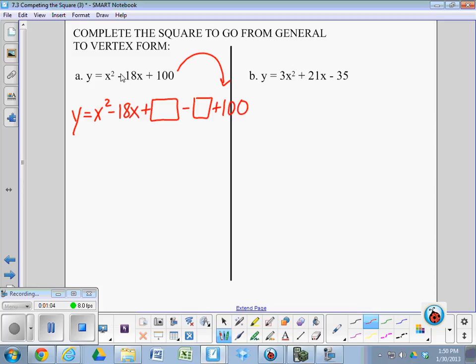Ready? Remember that 81 we just mentioned? That's the complete the square number. That little box gets filled in by half of 18 squared. What is it? 81 minus 81 plus 100.